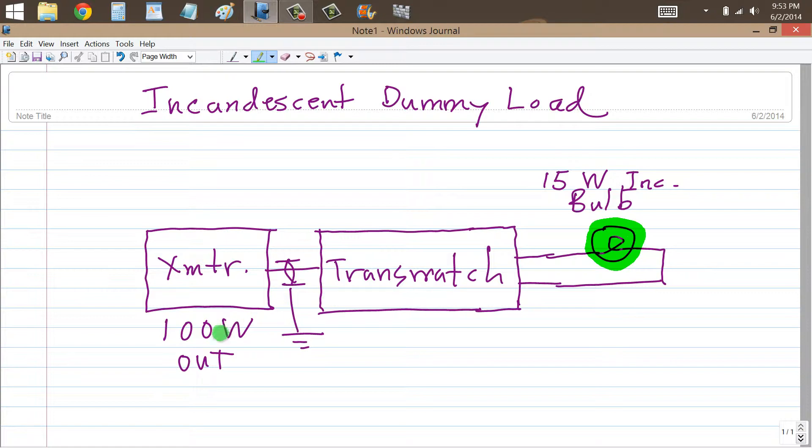Start out with very low power and tune your transmatch until you get a minimum SWR. The reason for starting out with low power is that you don't want to hit that thing with high power. You never tune up with high power. But if you run low power into this bulb, it'll probably just barely glow.